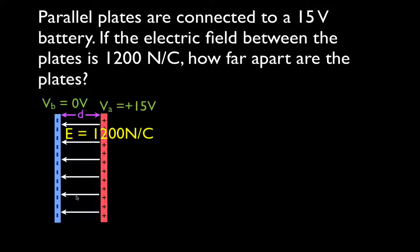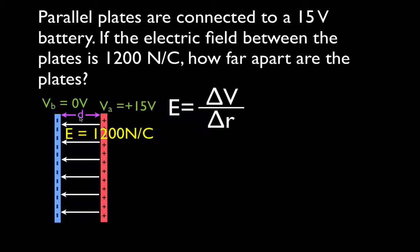You should remember that for the electric field between charged parallel plates there's a uniform electric field. On your AP Physics equation sheet you will see this equation: the electric field strength is equal to the potential difference between those plates divided by the separation of those plates. The separation is delta R on the new sheet, or simply D on the old sheet.